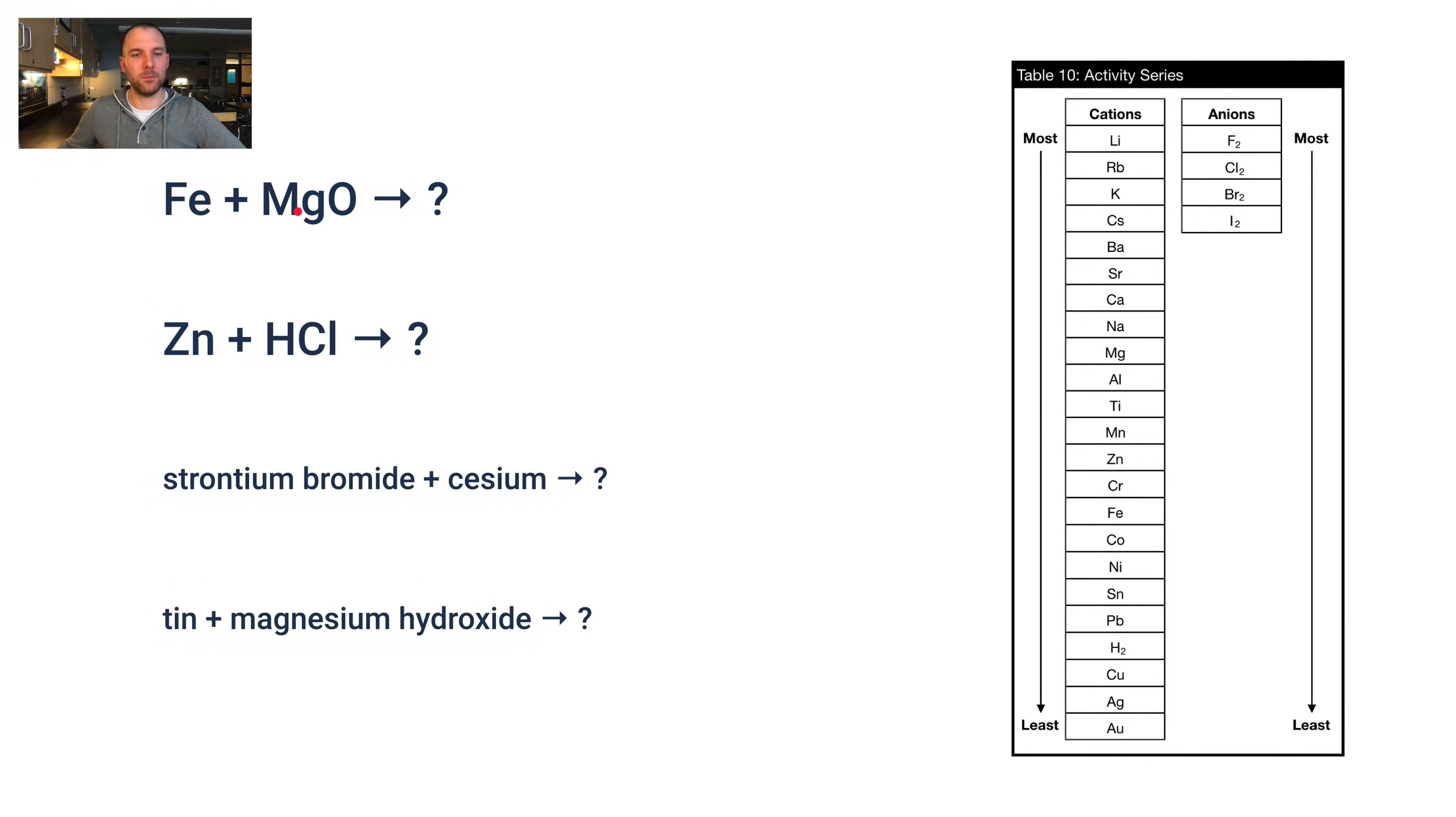So here we've got Fe and MgO. Fe is a metal. Mg then is the metal we want to compare these two. Here's Mg, here's Fe. Fe is lower than Mg, so we're not going to have a reaction here. No reaction. That one's nice and easy. Sometimes you like those.